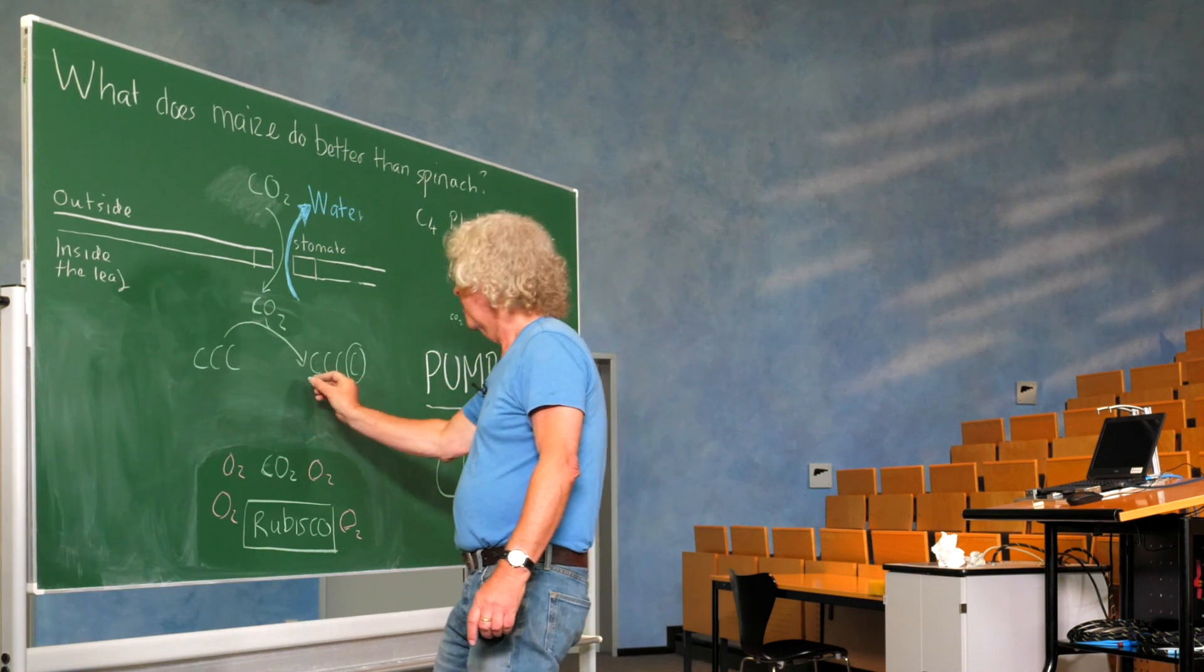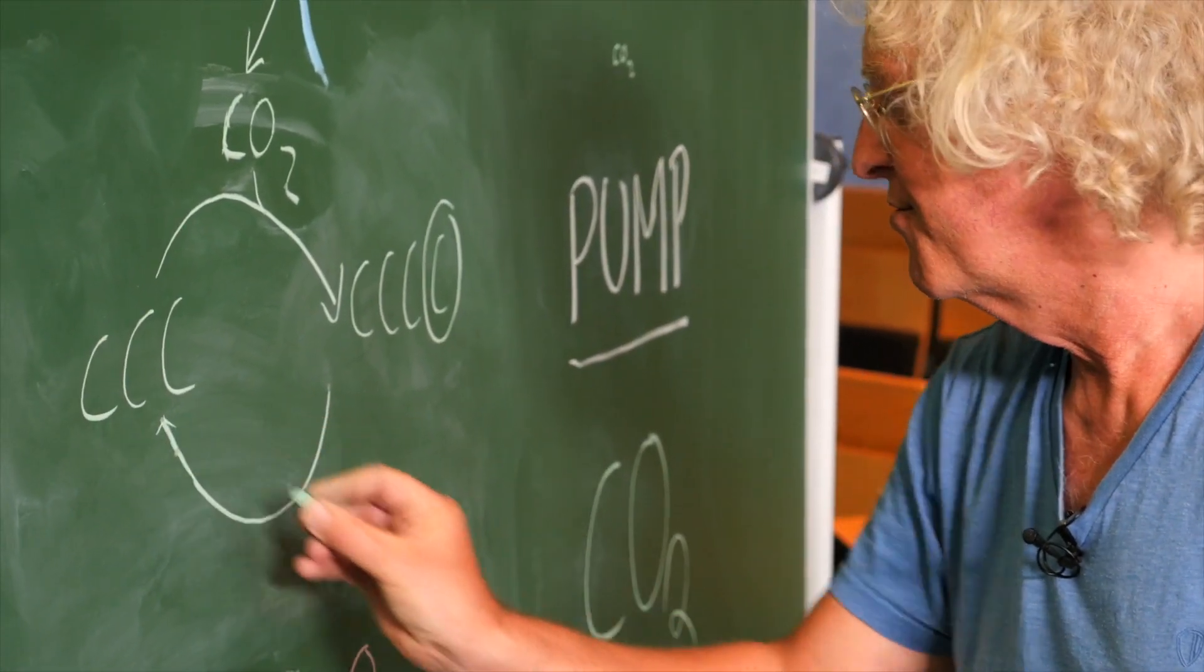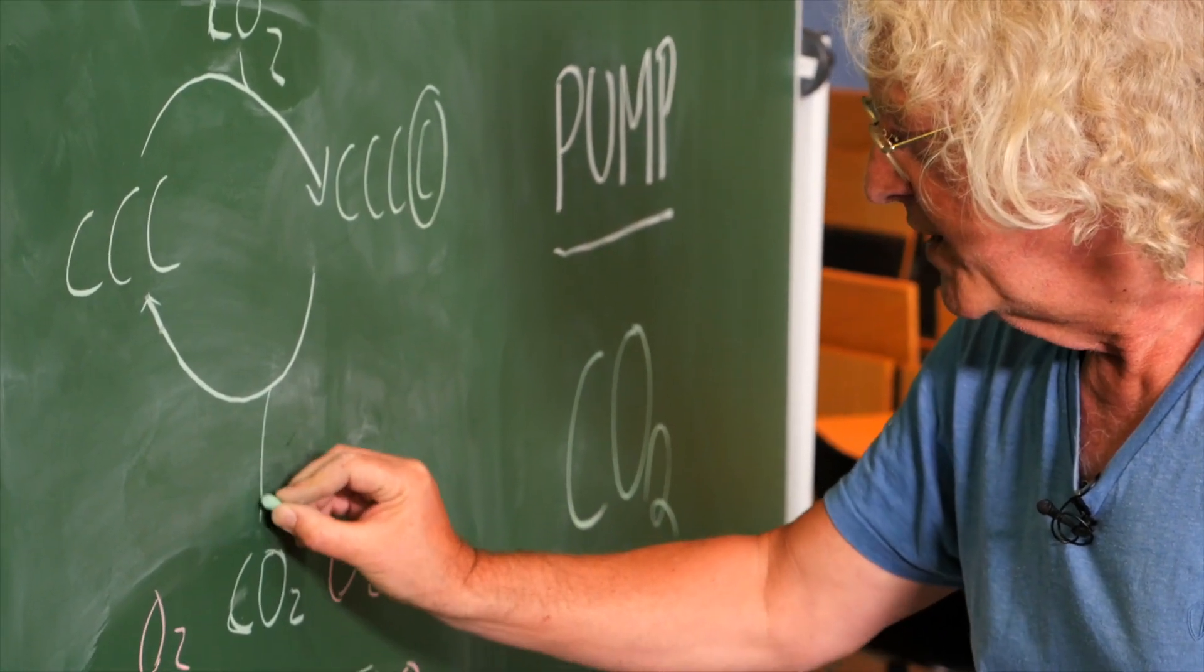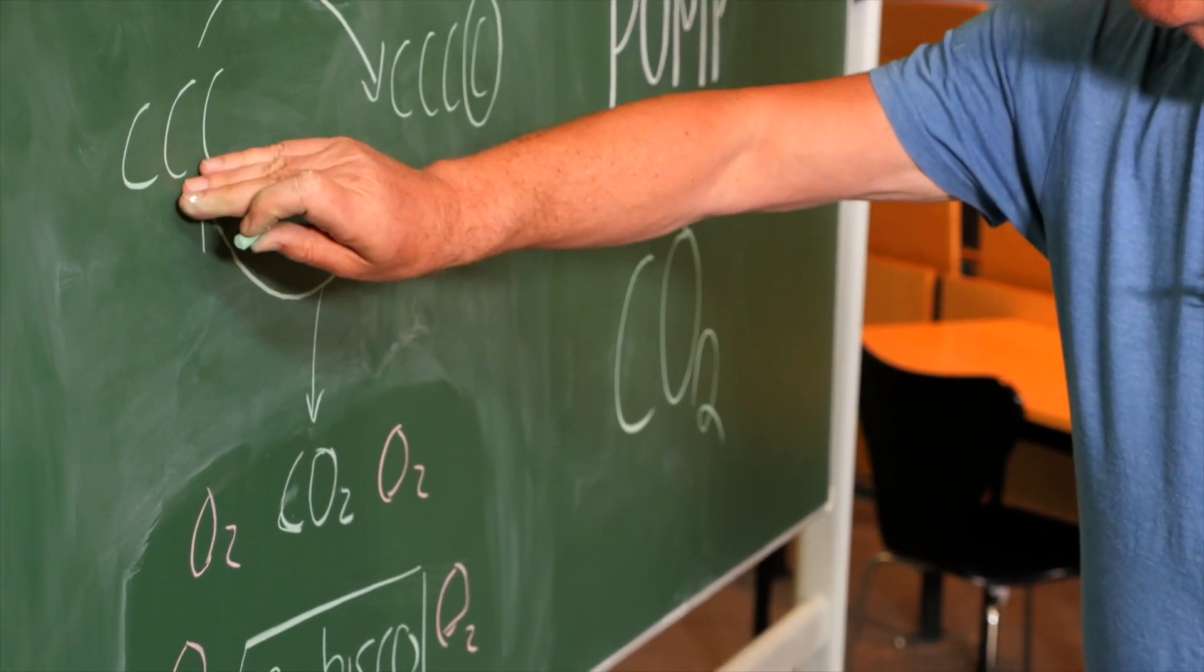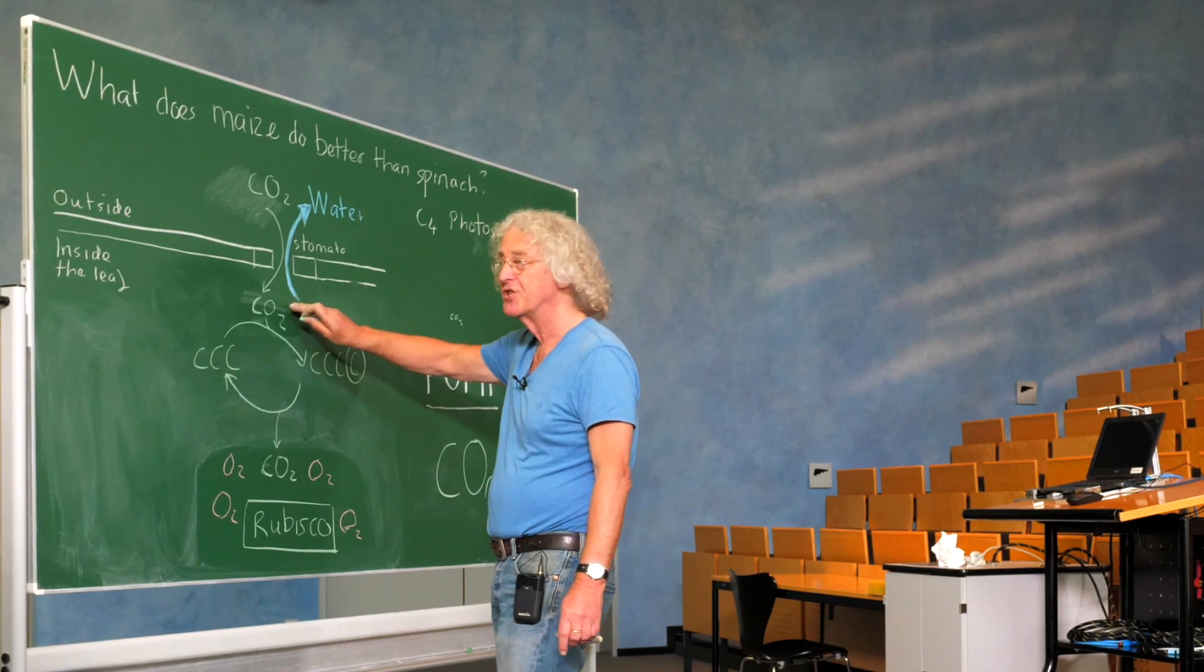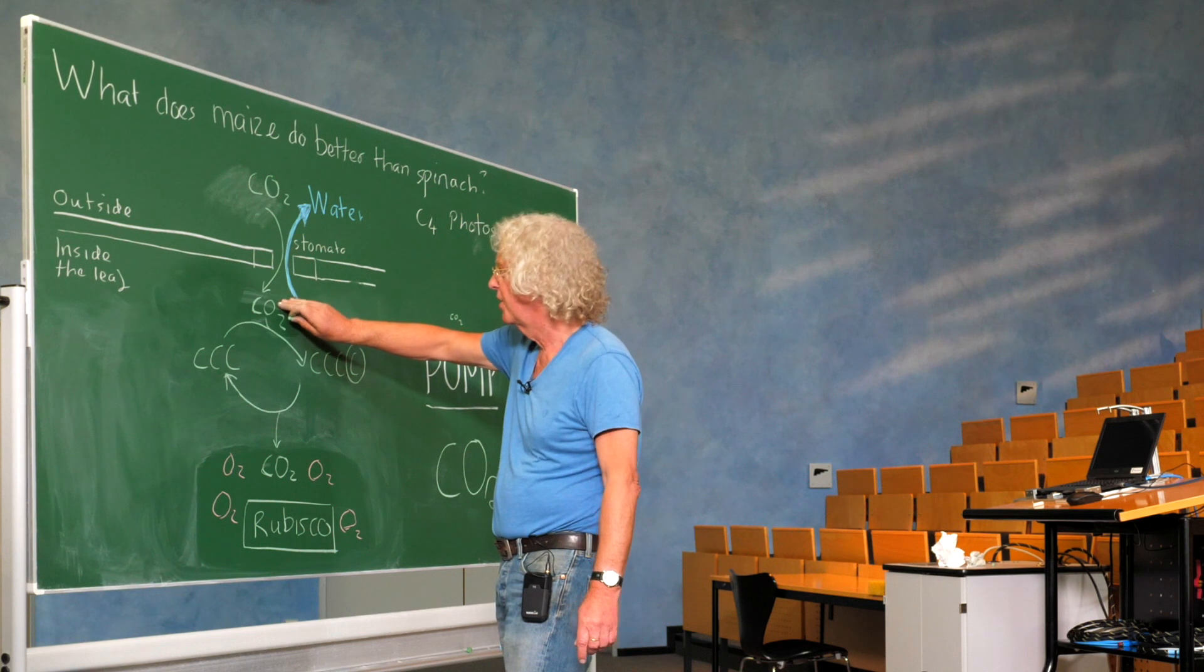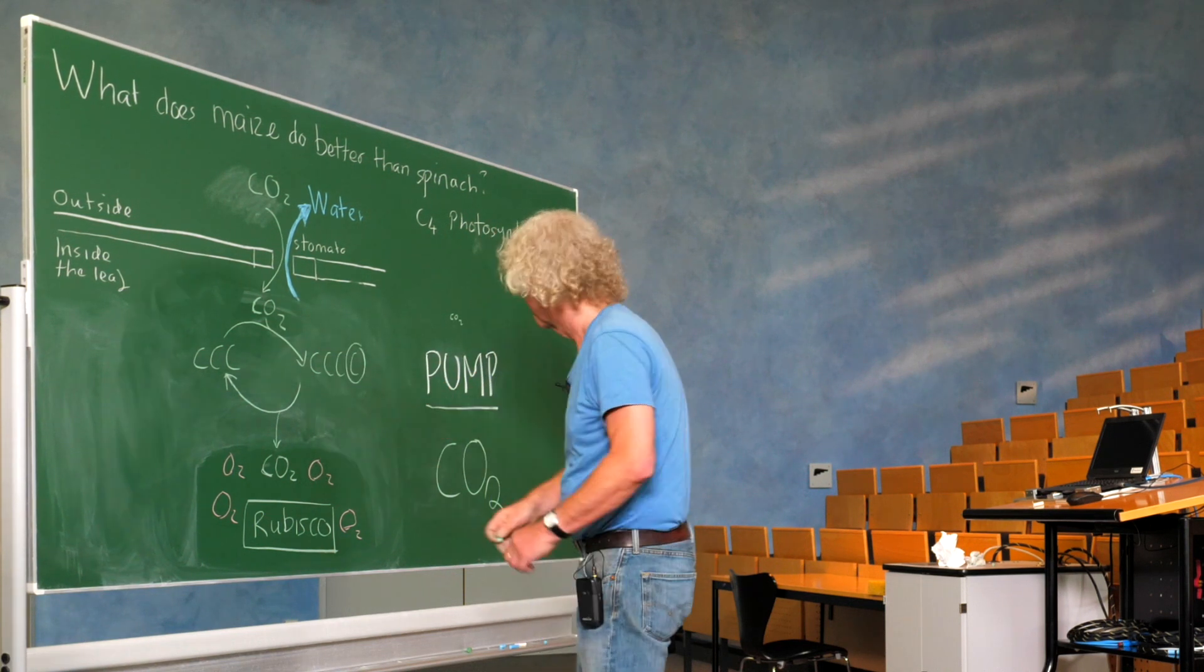This compound with four carbons then is in a second reaction which releases carbon dioxide and recycles the three carbon compound. So this goes in a circle. And the result is that it moves carbon dioxide from one place to another place and concentrates it.